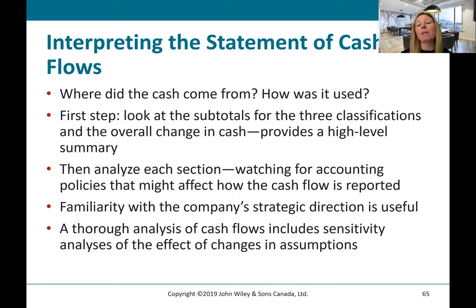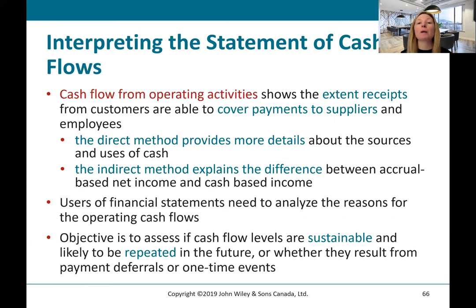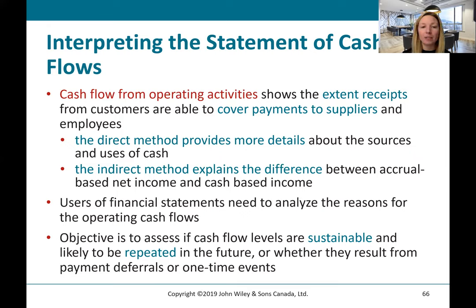The MD&A and familiarity with the company's strategic direction is useful. Cash flow from operating activities shows the extent to which receipts from customers are able to cover payments to suppliers and employees. The direct method provides more detail about the sources and uses of cash, while the indirect method explains the difference between accrual-based net income and cash-based income. Users need to analyze whether operating cash flows are sustainable and likely to be repeated, or if they result from a one-time event like the sale of land.